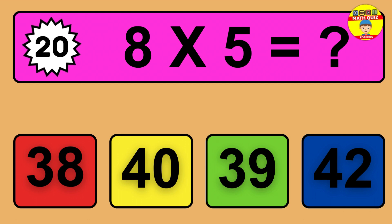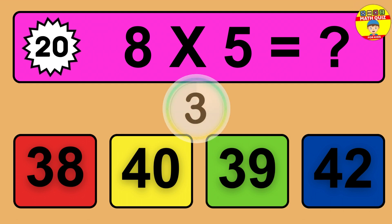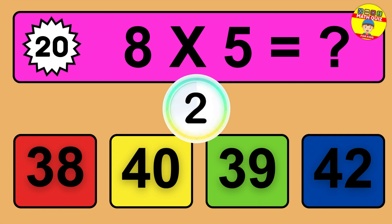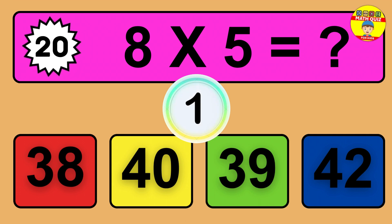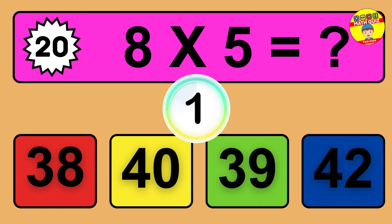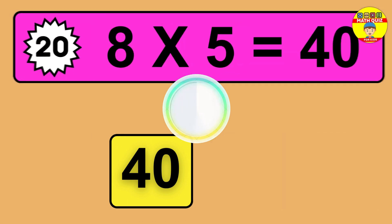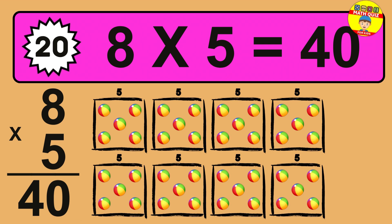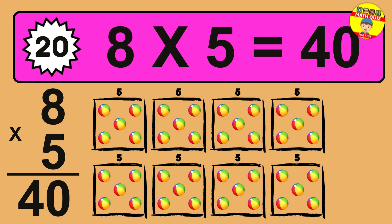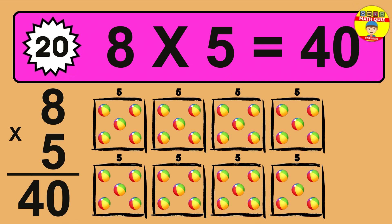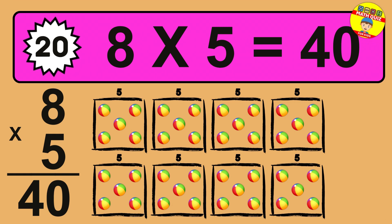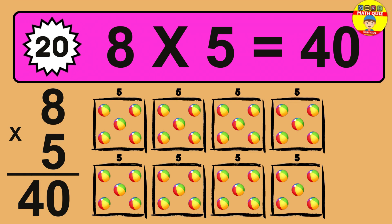Question 20. 8 times 5 equals what? The answer is 8 times 5 is 40. To calculate, we have 8 groups with 5 balls each one. So how many balls do we have? 40 balls.